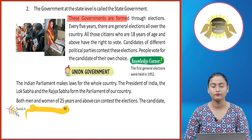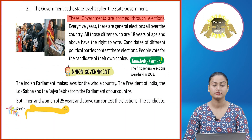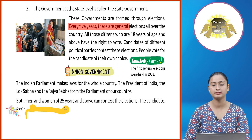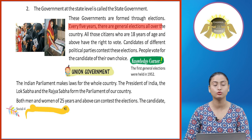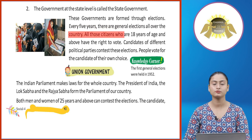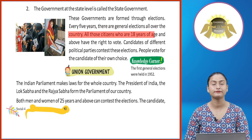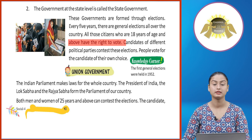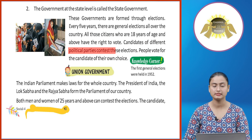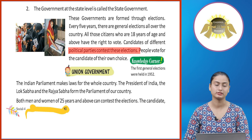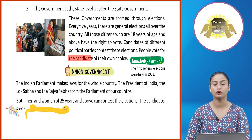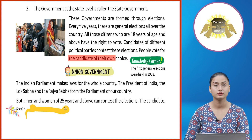These governments are formed through elections. Every five years there are general elections all over the country. All citizens who are 18 years of age and above have the right to vote. Candidates of different political parties contest these elections, and people vote for the candidate of their own choice.